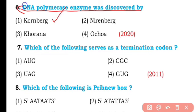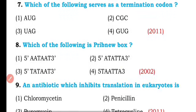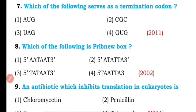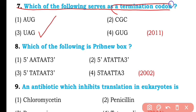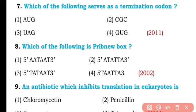DNA polymerase I enzyme was discovered by Kornberg for the first time. Question number seven: Which of the following serves as a termination codon? AUG, CGC, UAG, or GUG? So the correct answer is option three — UAG is a termination or stop codon.